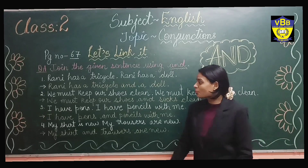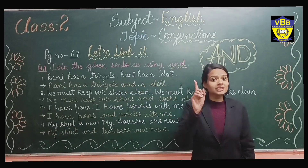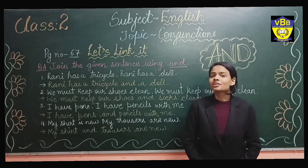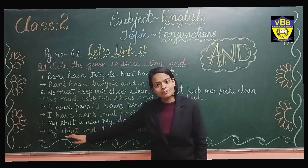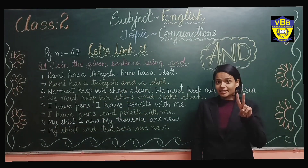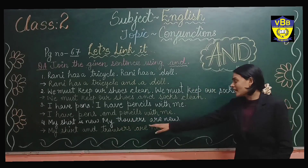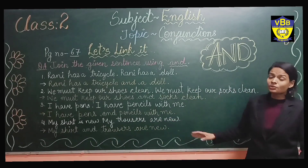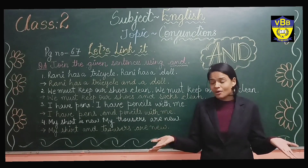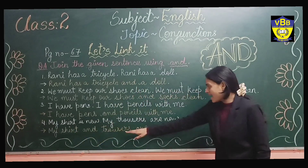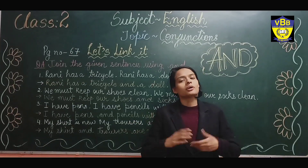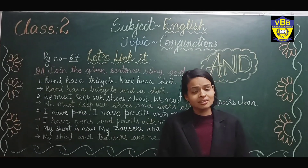Now move to question number 4. What is the first part of question number 4? You can read it by yourself. I will help you in reading: 'My shirt is new.' And the second part is: 'My trousers are new.' So I will join it with the conjunction 'and': 'My shirt and trousers are new.' I hope you understand the topic well. Thank you.